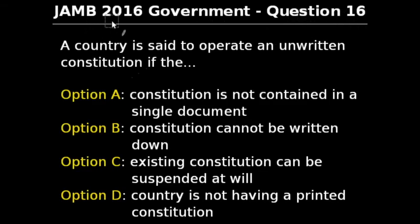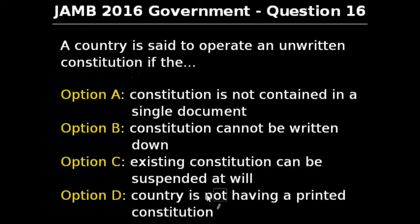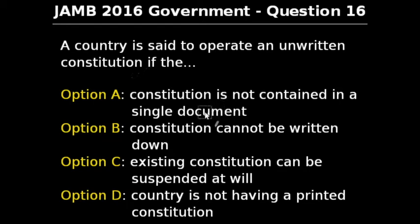Question 16 of JAM 2016 government exam says: a country is said to operate an unwritten constitution if — option A: the constitution is not contained in a single document, option B: the constitution cannot be written down, option C: the existing constitution can be suspended at will, option D: the country is not having a printed constitution. An unwritten constitution is one in which the fundamental principles of the organization and power of government are not confined in one document; it is usually a combination of statutes, judicial principles, customs and conventions. So the correct answer is option A.